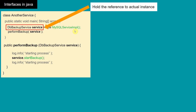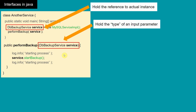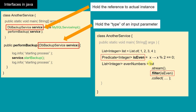This DBBackupService interface holds the reference to the actual instance. So interfaces are used to hold references to actual instances. Another use is to hold the type of an input parameter. These are the two important locations where we use interfaces: to hold the reference to an actual instance, and to hold the type of an input parameter.